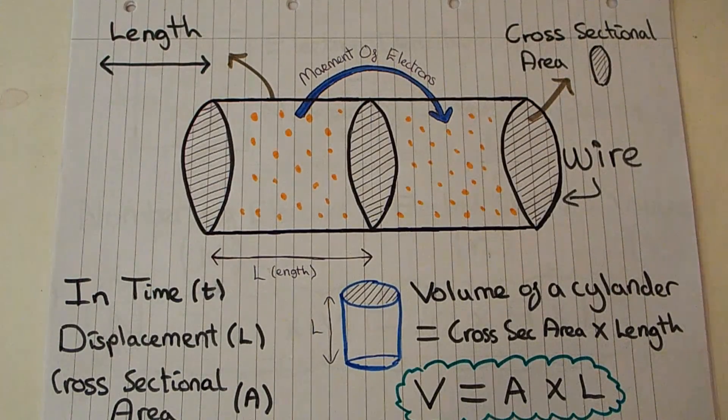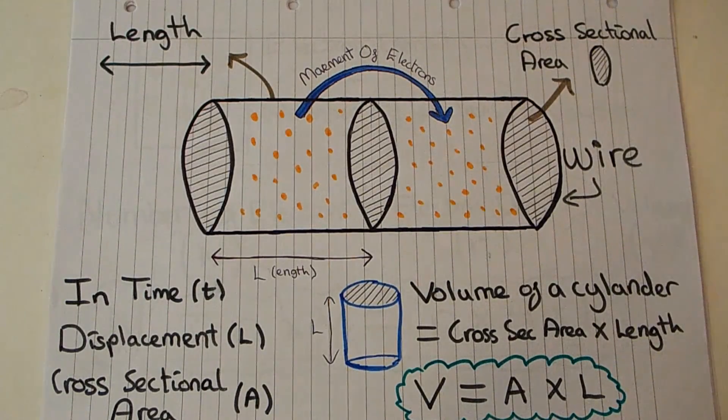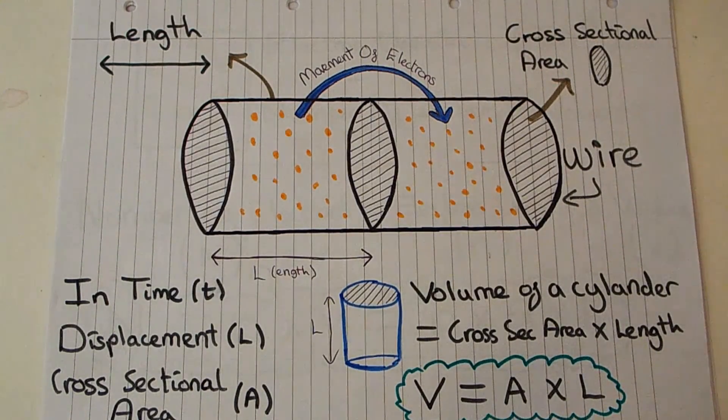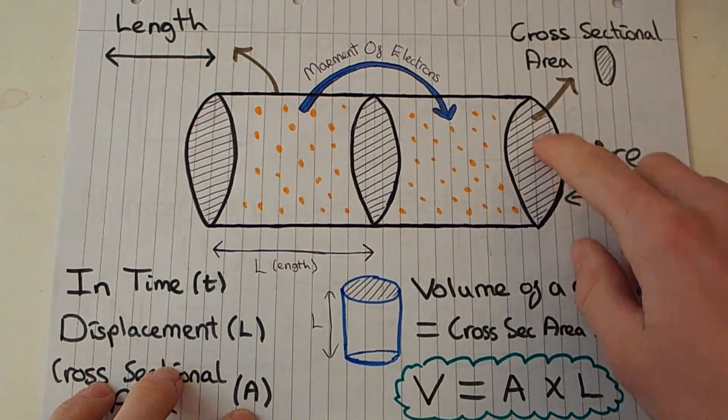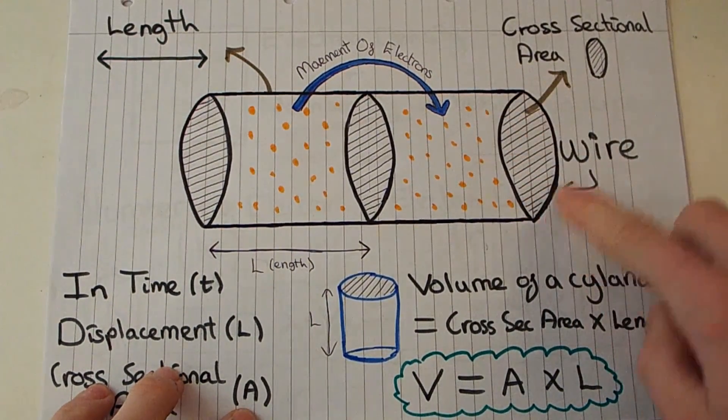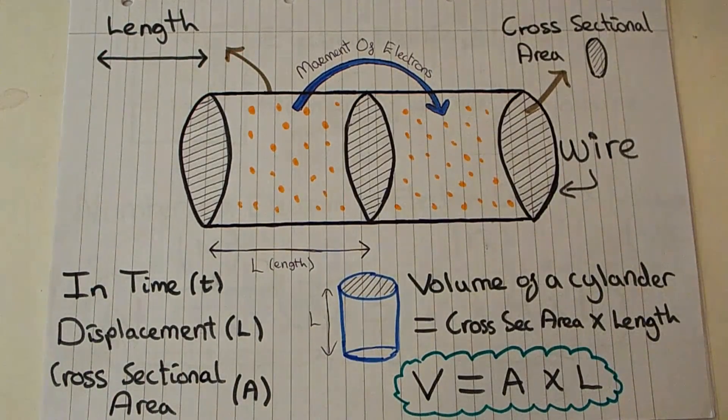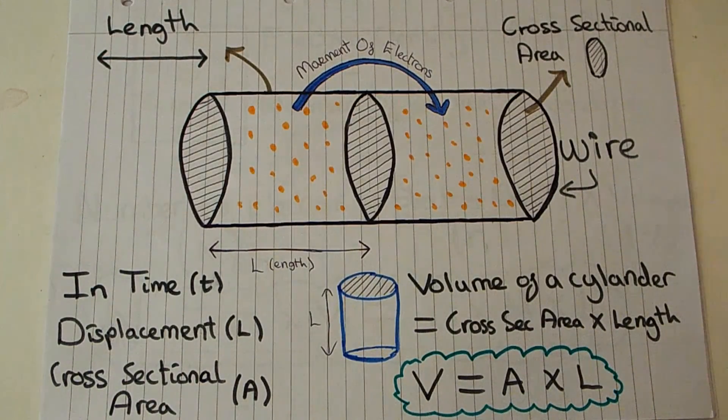So our displacement L is how far along the electrons are moving across the wire and our cross-sectional area is the cross-sectional area of the wire. I've done lines over here so you can see what it is - if you just cut it open it's the surface area of that cut wire.